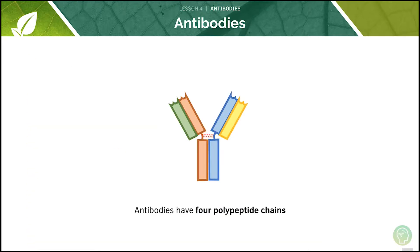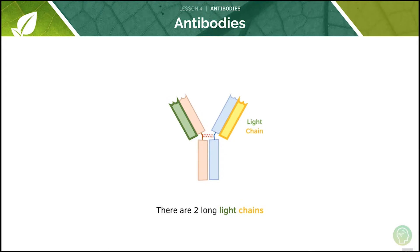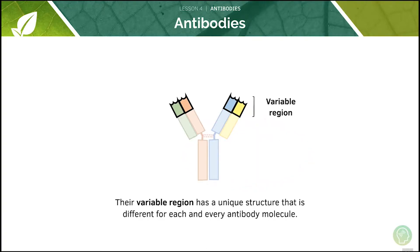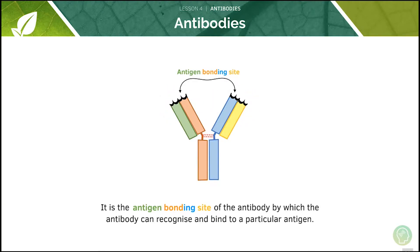Antibodies are Y-shaped and they are formed of four polypeptide chains. There are two long heavy chains and two long light chains. Every antibody has the same constant region which is used to bind during phagocytosis. Their variable region has a unique structure which is different for each and every antibody molecule — it is the antigen binding site of the antibody by which the antibody can recognize and bind to a particular antigen.